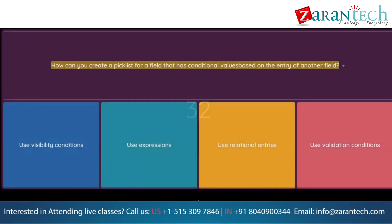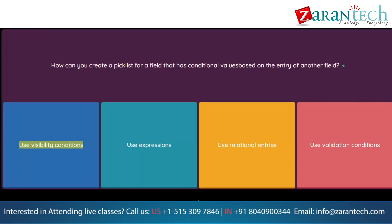Question: How can you create a pick list for a field that has conditional values based on the entry of another field? Option 1: Use visibility conditions. Option 2: Use expressions. Option 3: Use relational entries. Option 4: Use validation conditions.